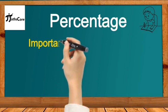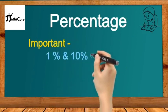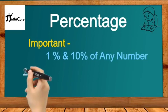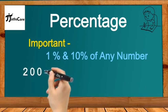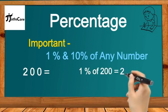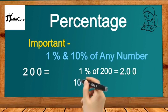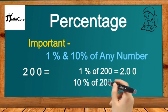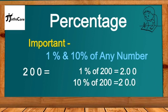In the Vedic math method, it is most important that we know 1% and 10% of any number to find out a given percentage quickly. Let's take the example of 200. To find 1% of 200, we put the decimal point two places from the right, giving us 2. To find 10% of 200, we put it one place from the right, giving us 20. After finding 1% and 10%, it is easy to find any percentage of a given number.